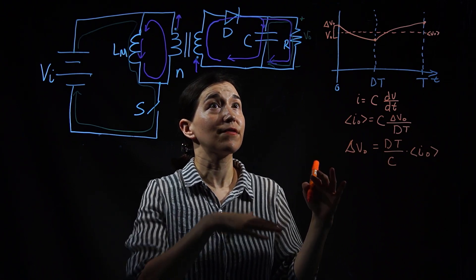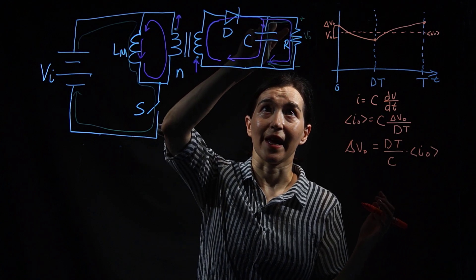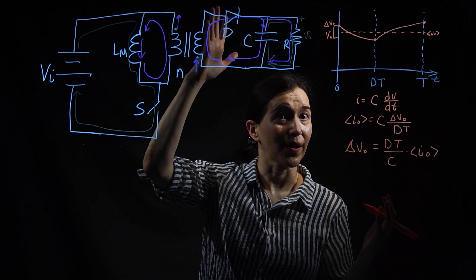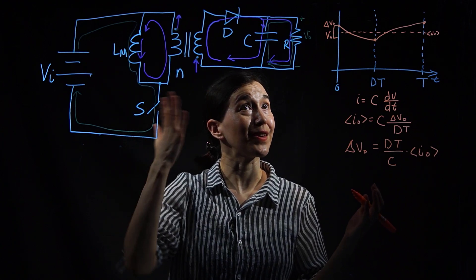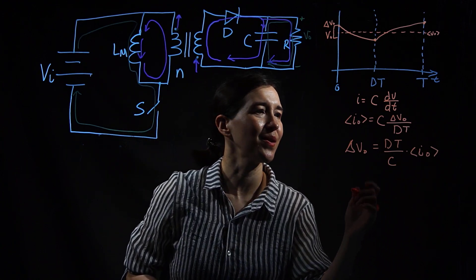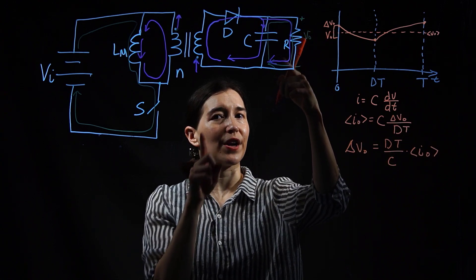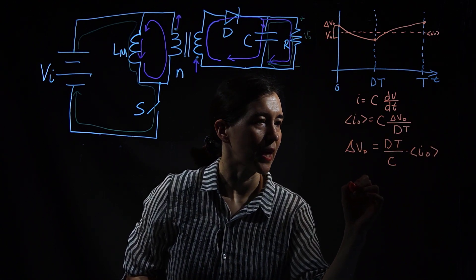If you know your output current already you can directly put this in and solve for this ripple. If you don't and you have a resistive circuit like this, then you have V out and R. You know from Ohm's law V equals IR, so we can replace this I with V out divided by R. Let's put that in there.